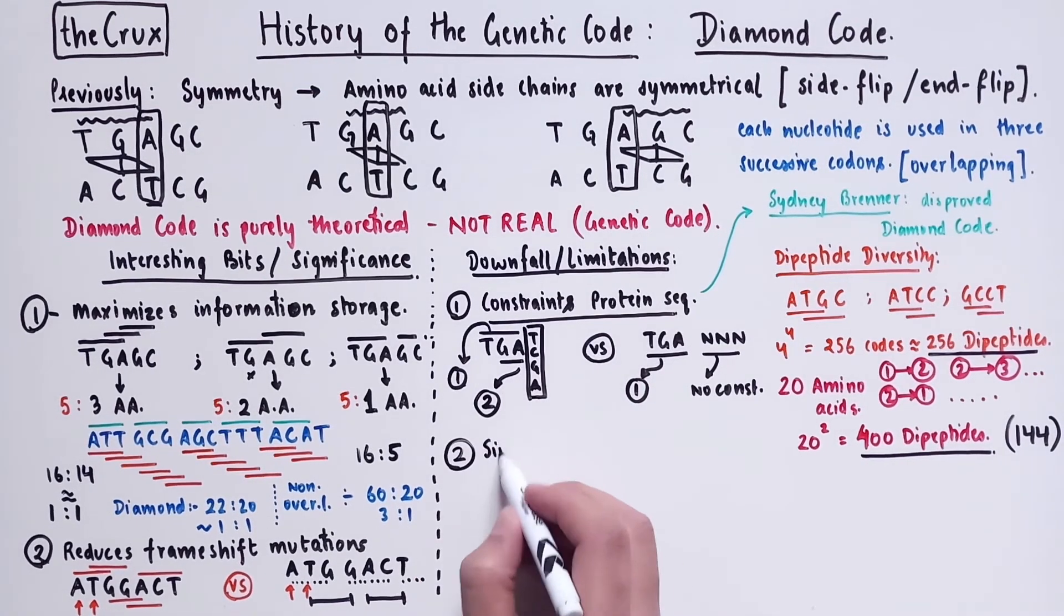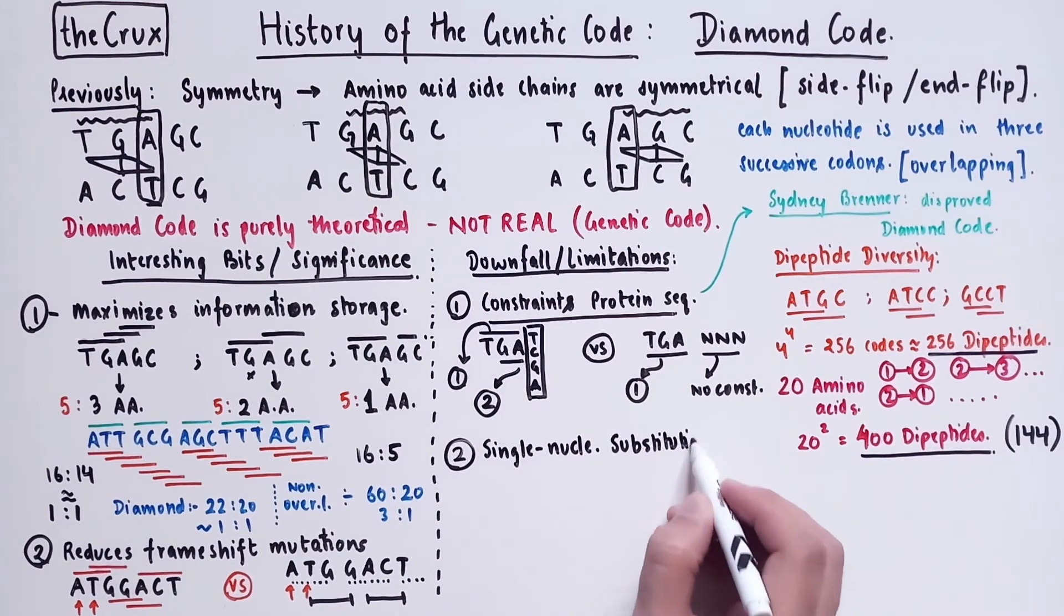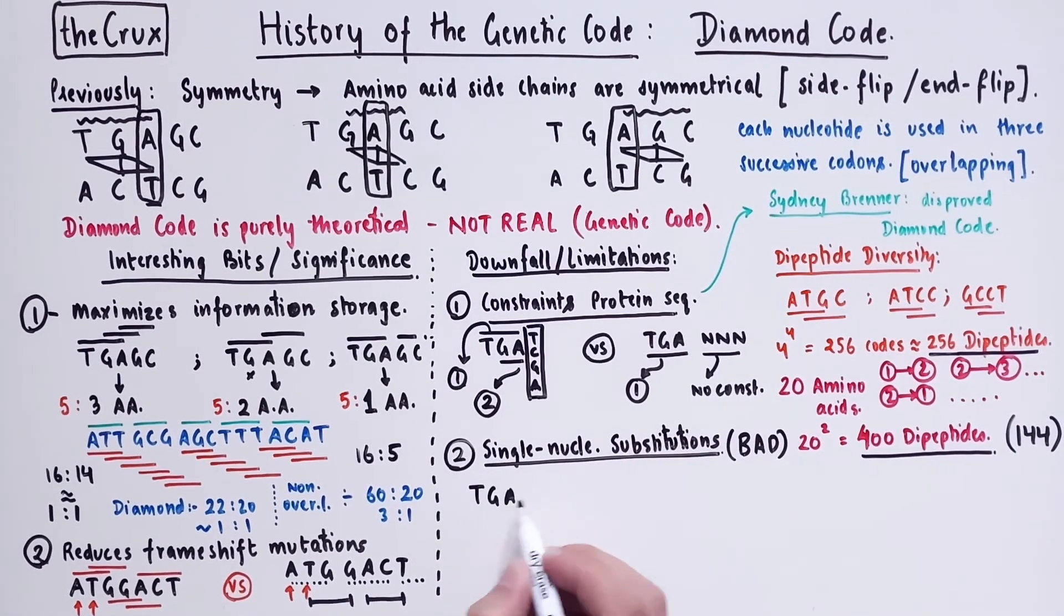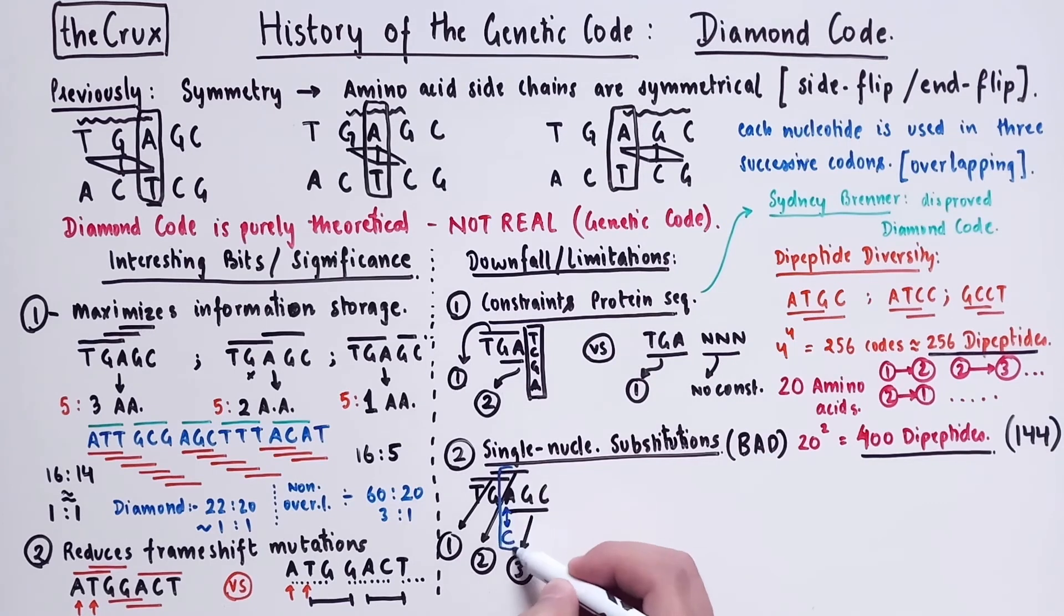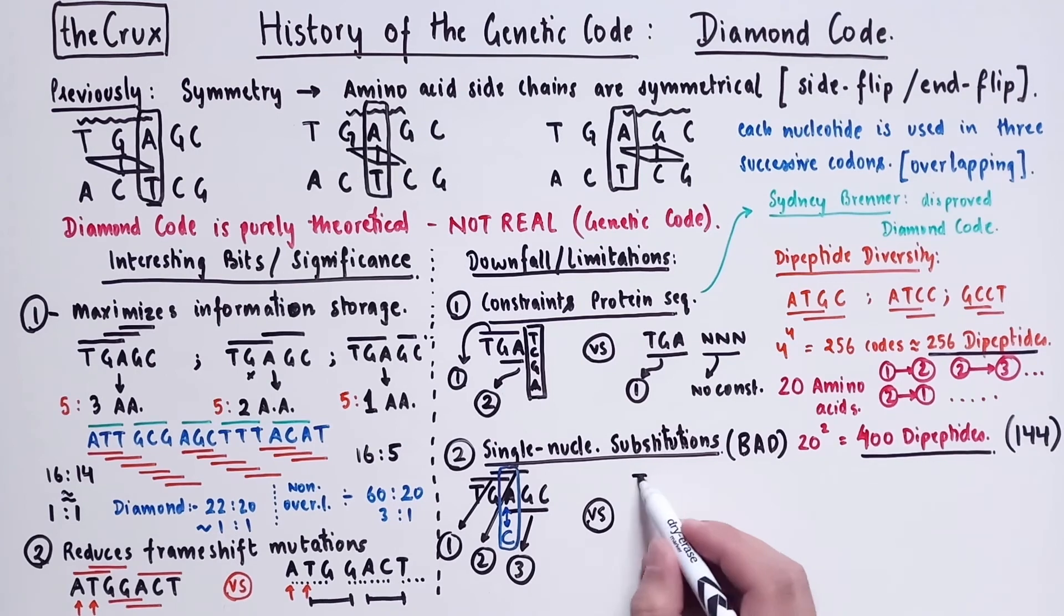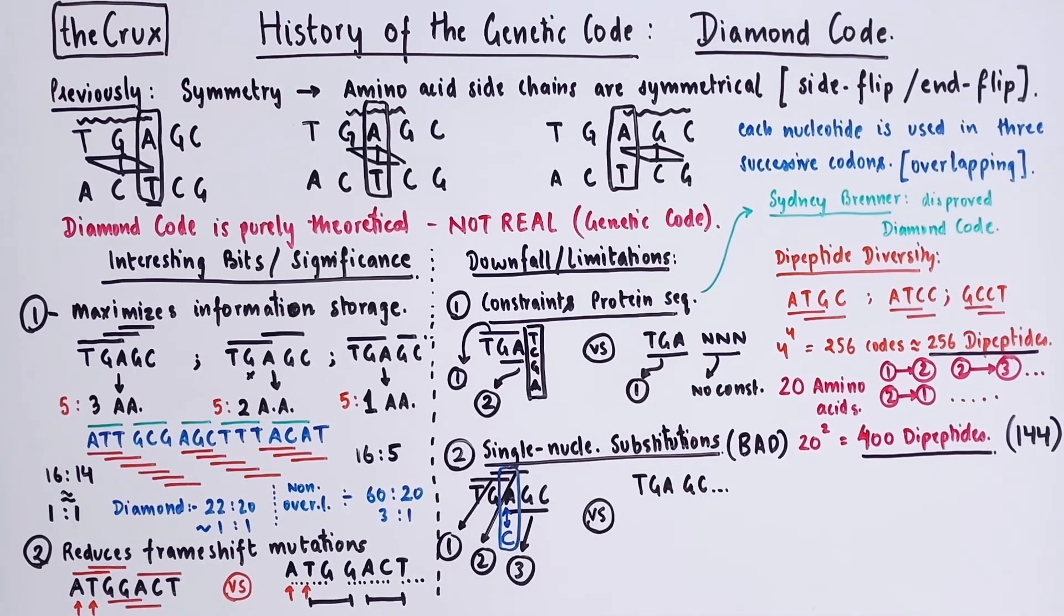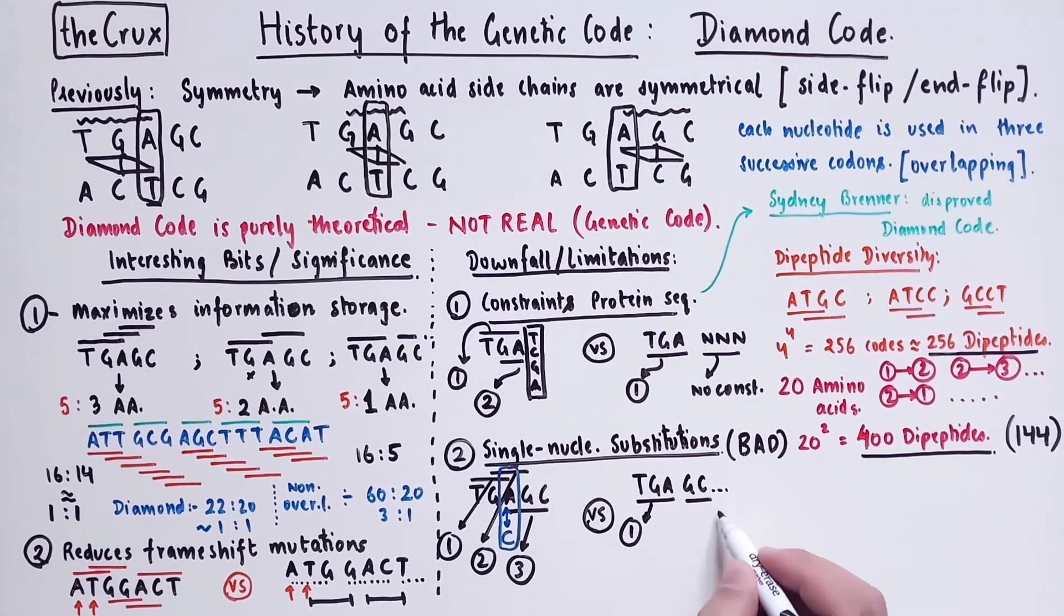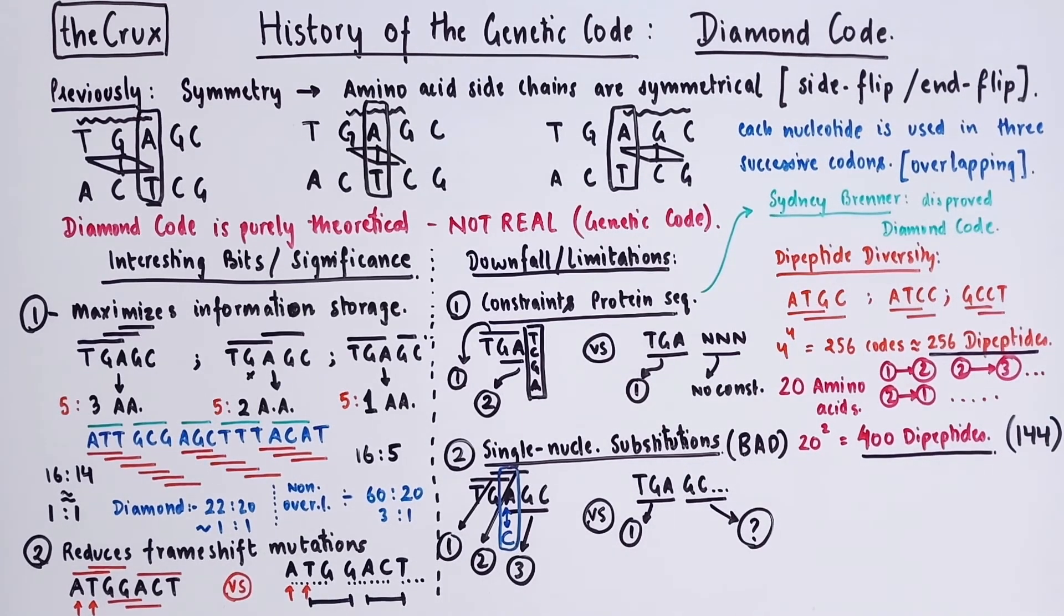The second limitation is the problem of single nucleotide substitutions, which can be very severe under the diamond code. If we have this piece of DNA strand, under the diamond code, you get three codons and that gives rise to three amino acids. Now if you mutate this A to C, it affects all three amino acids, because this A is shared by three codons. And this is exactly what we said in the beginning, that each nucleotide is shared by three successive codons. In contrast, doing the same exercise with the non-overlapping code, you have TGA producing one amino acid, and the remaining codons are independent. And if you have a substitution of A to C, it will only affect this one amino acid. So the consequences are less severe.